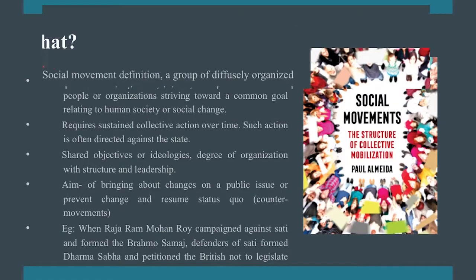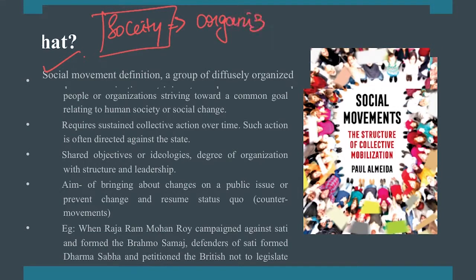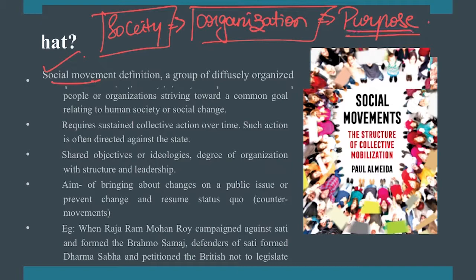What exactly is a social movement? When we talk about society, we have discussed that society is an organization — a coming together of people with a specific purpose. A social movement is basically a movement to change or protect an existing structure of organization of people, or it is an aspiration for a particular purpose, or to retain the existing purpose.